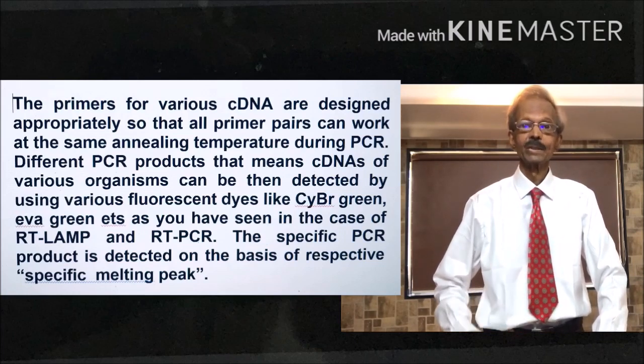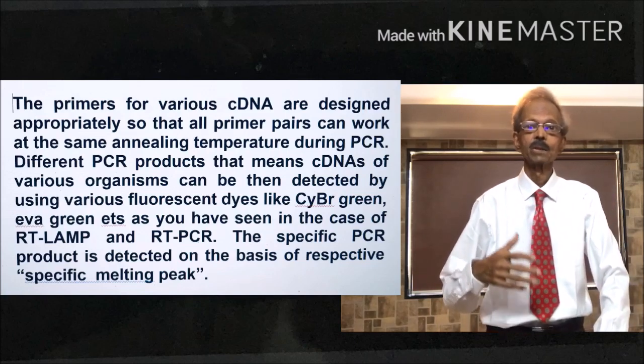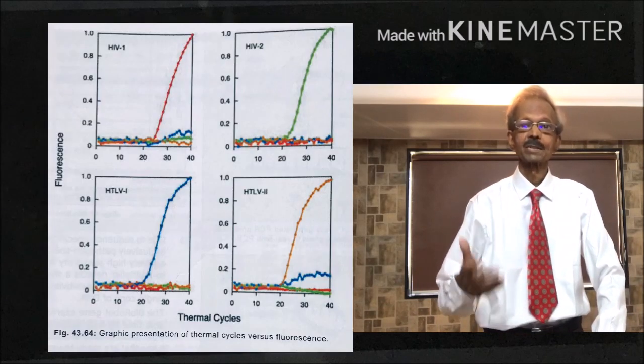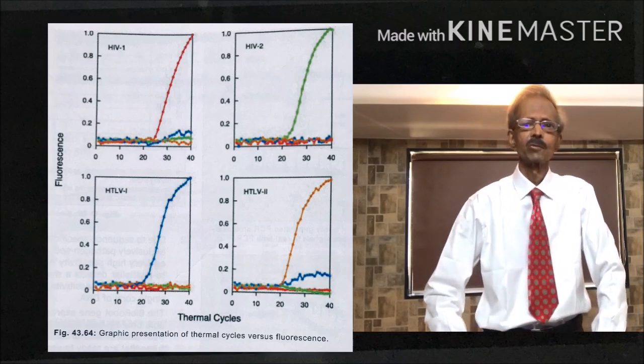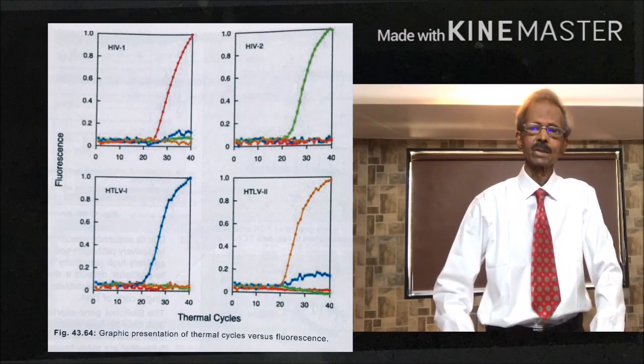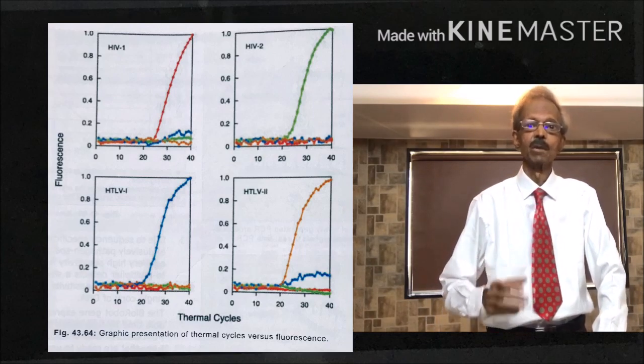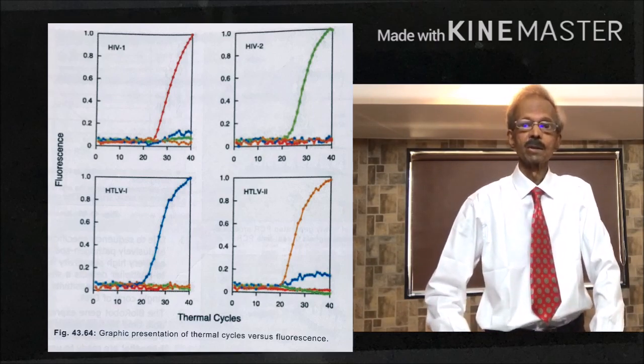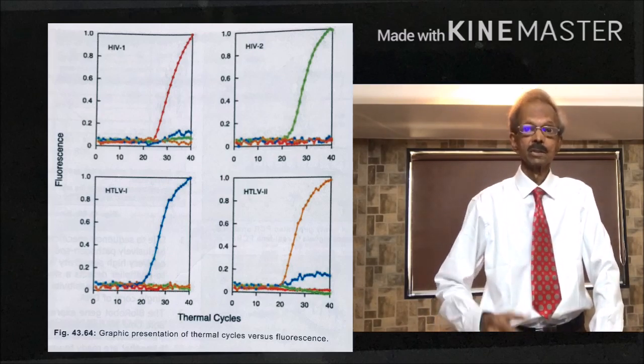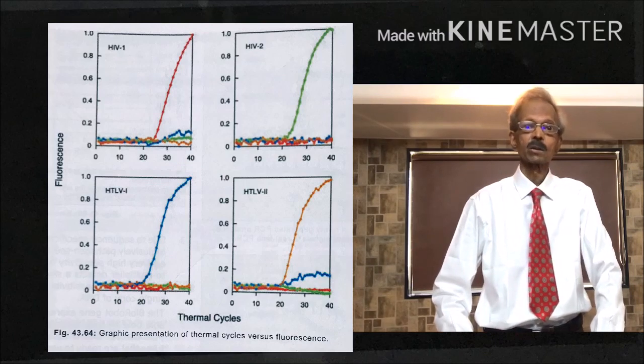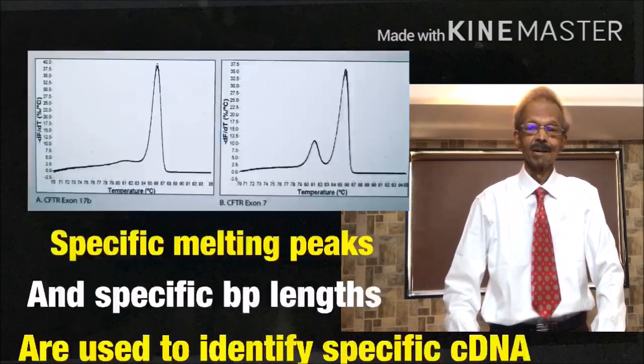Different PCR products, that means cDNAs of various organisms can then be detected by using various fluorescent dyes like cybergreen, evagreen, etc. as you have seen in the case of RT-LAM and RT-PCR methods. The specific PCR product is then detected on the basis of respective specific melting peaks.